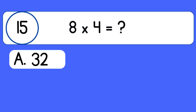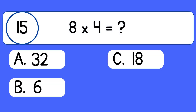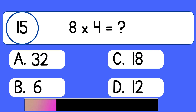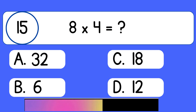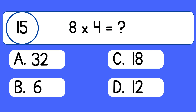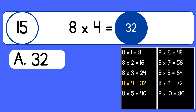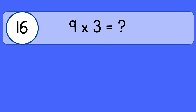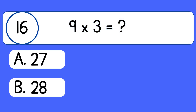Eight times four. Eight times four equals thirty-two. Nine times three.